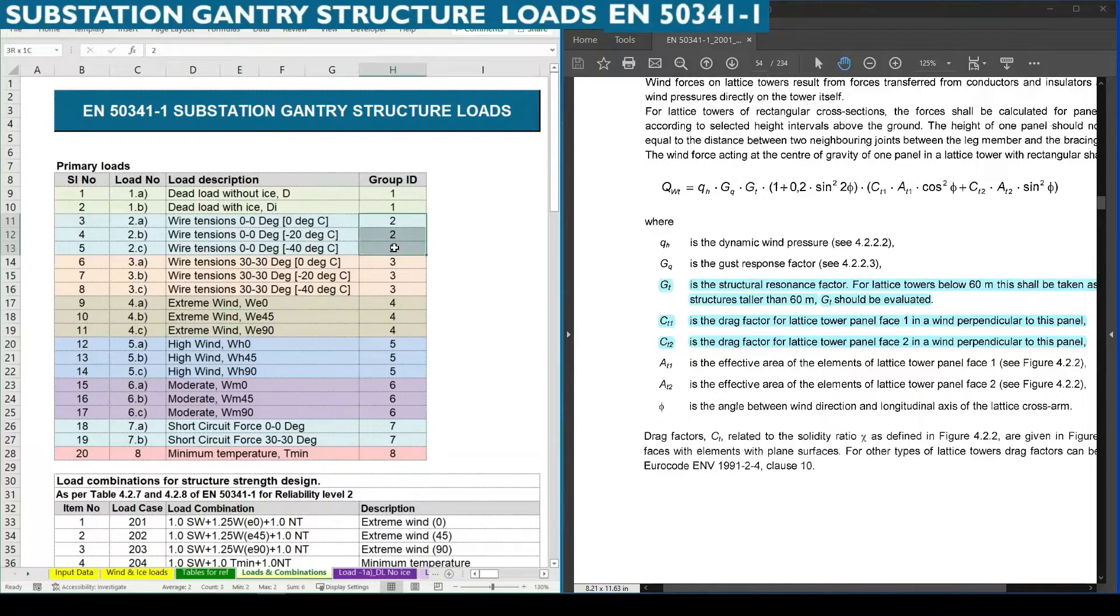So all three wire tensions for zero degree deviation are to be considered in group ID 2. For group ID 3 it is 30 degree deviation of wire tension. Let me explain what is this degree, 30 degree and zero degree.